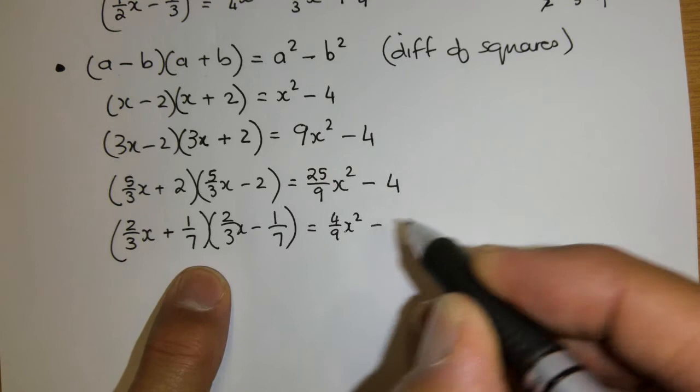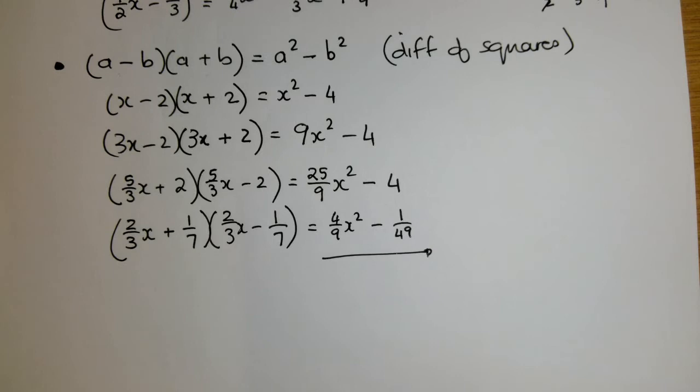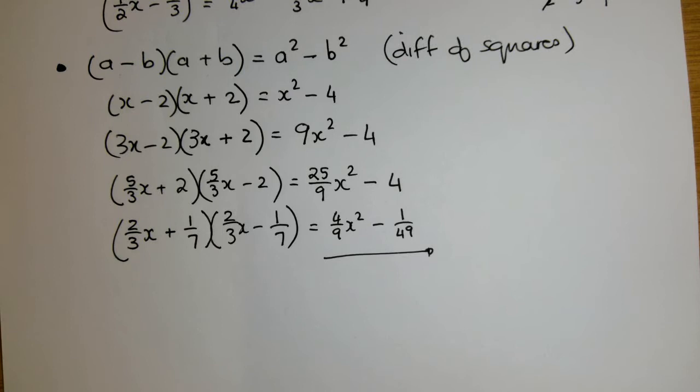So it's the first one squared. 4 over 9x squared minus 1 over 7 squared, which is 49. And there your product has been complete. Now we can throw this into a sum and ask quite a weird question of you, a combination.